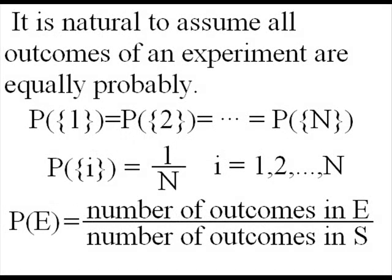For many experiments, it's natural to assume that all outcomes of an experiment are equally probable, so the probability of one event is equal to another. And if that's true, if we can make that assumption, then that really means that the probability of any event E equals the proportion of outcomes in the sample space that are contained in E.